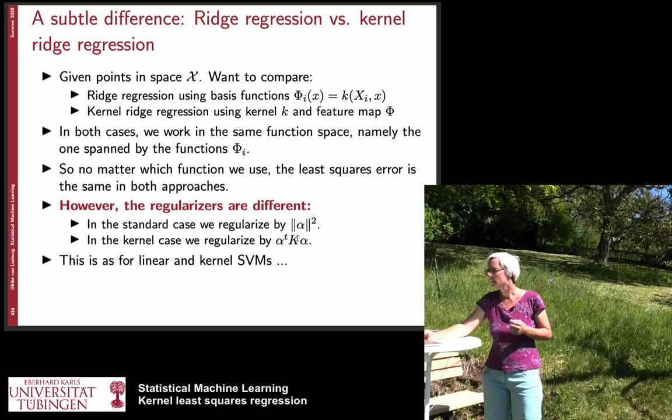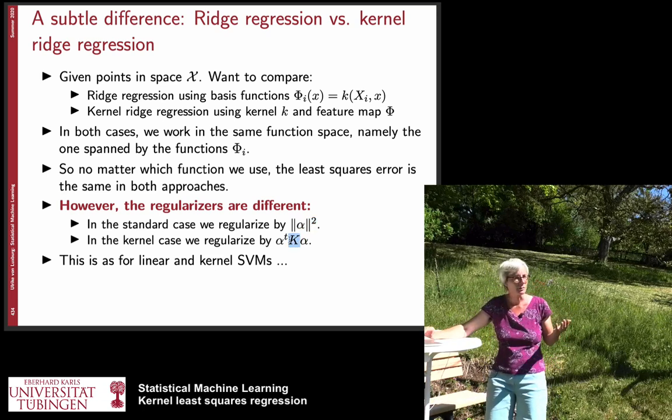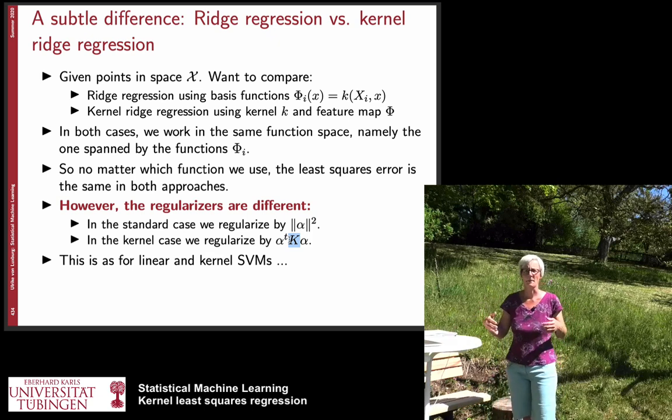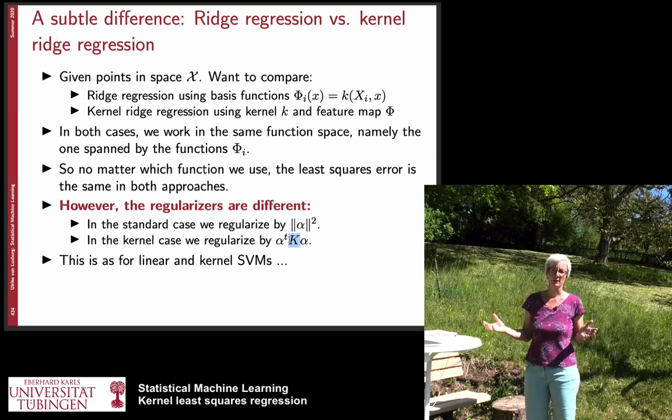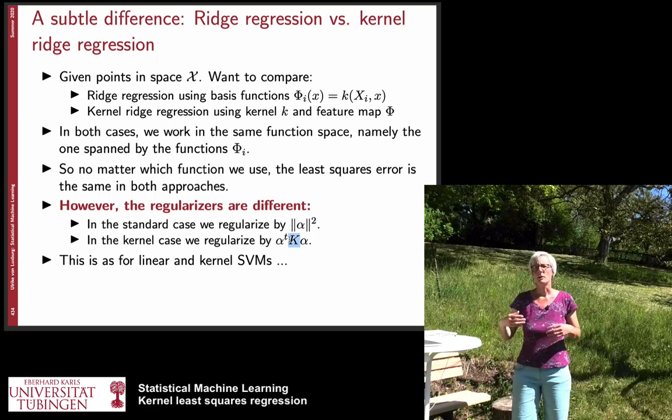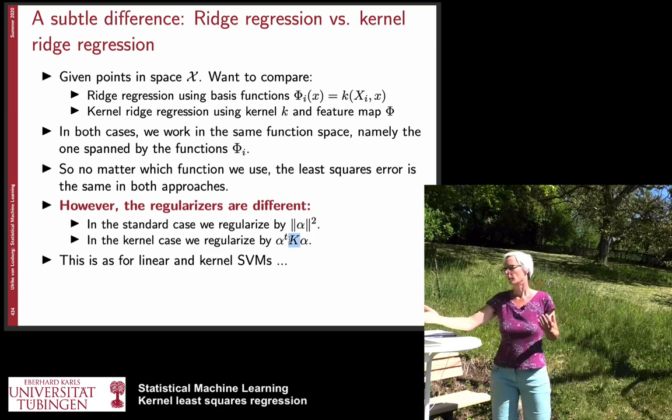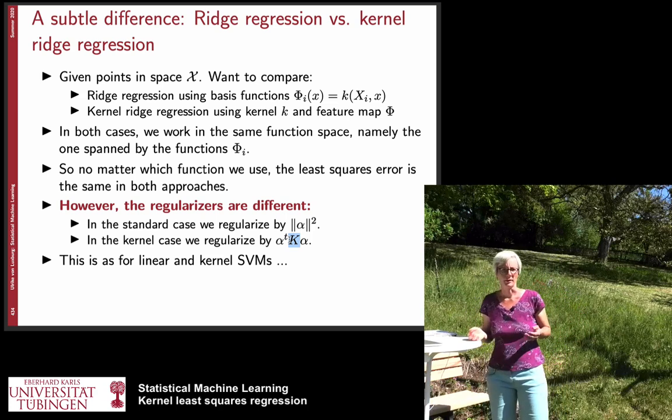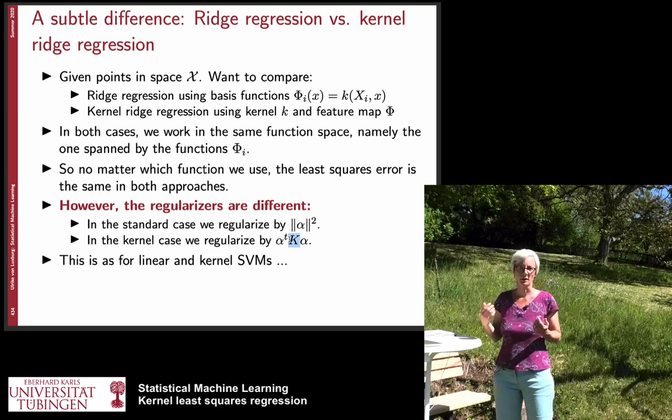It's a bit unclear what this difference really would make. Like both of them regularize. You might need to choose different regularization constants lambda because the order of magnitude of these expressions might be different. But it's hard to predict like if one or the other might be different, might be better.